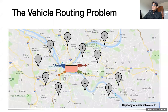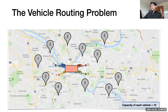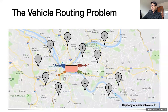So without further ado, let's get started. The vehicle routing problem in its most classical version is the following: you have a depot where you have a number of vehicles available for delivery, and you want to serve a number of customers scattered geographically. Each vehicle has a certain finite capacity in terms of the amount of goods it can carry, and each customer has a certain demand, which I've denoted in numbers inside these little blobs.